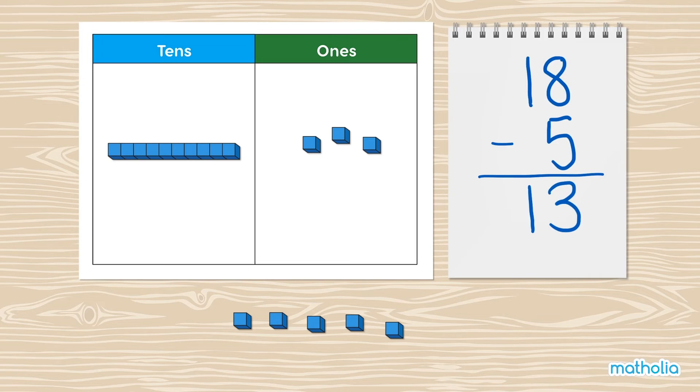1, 10 and 3 1s makes 13. There are 13 blocks remaining in our place value chart.